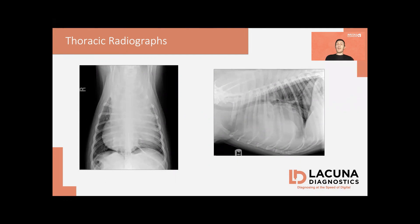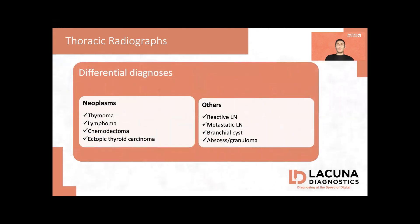The differential diagnoses that the veterinarian included were tumors, in particular thymoma and lymphoma, but also less common conditions like chemodectoma or ectopic thyroid carcinoma, and then other non-neoplastic conditions, which included a reactive lymph node, a metastatic lymph node, a branchial cyst, or an inflammatory process, in particular an abscess or a granuloma.